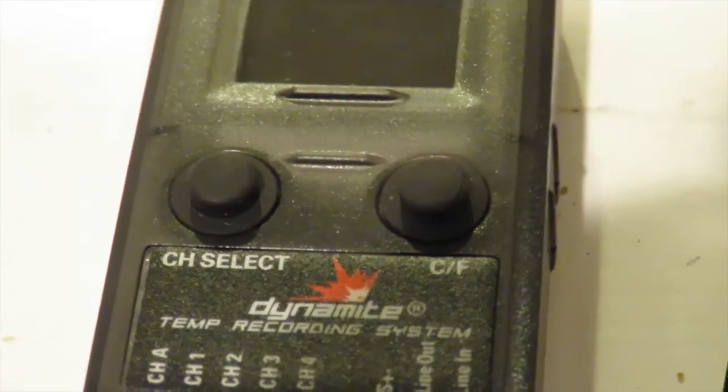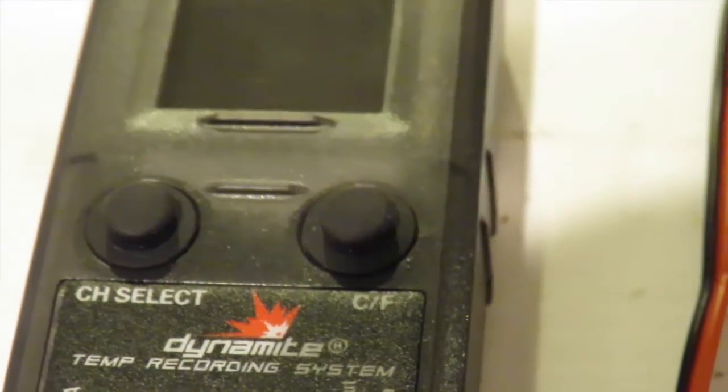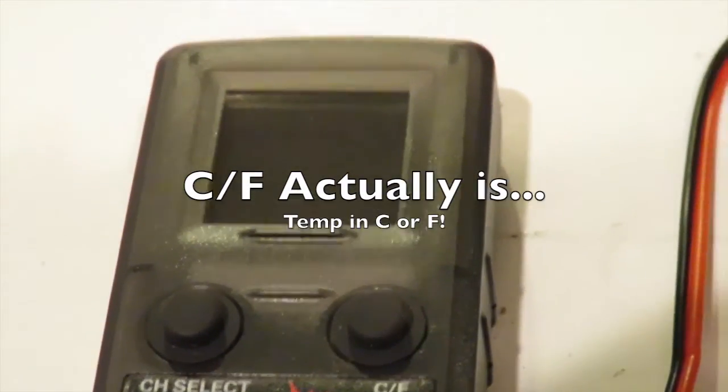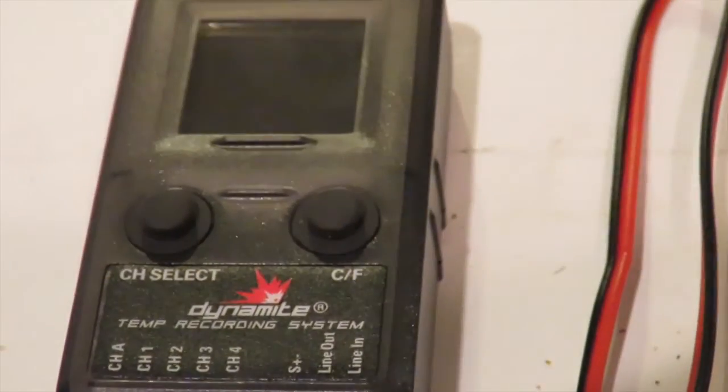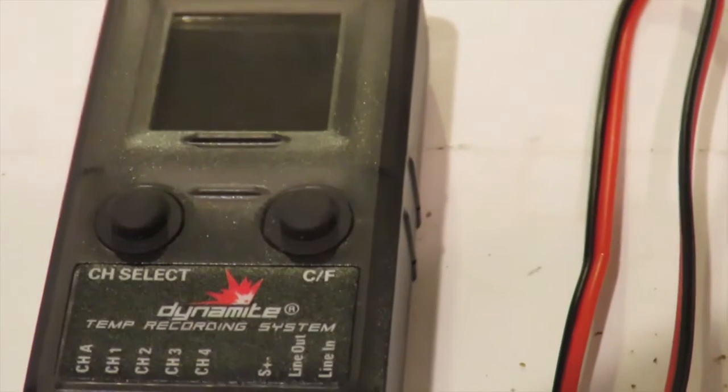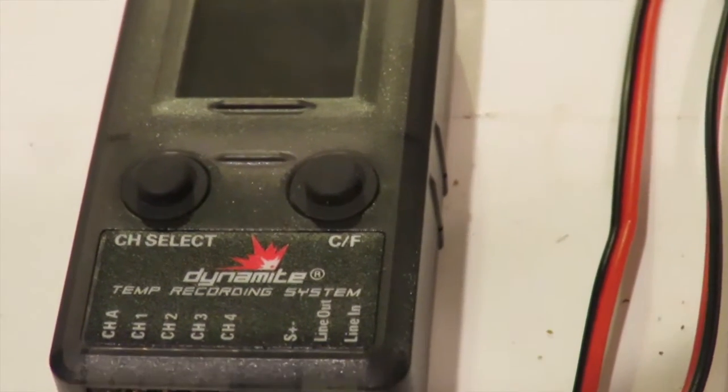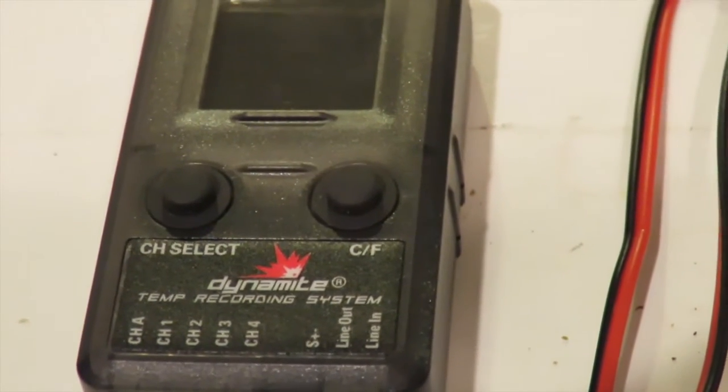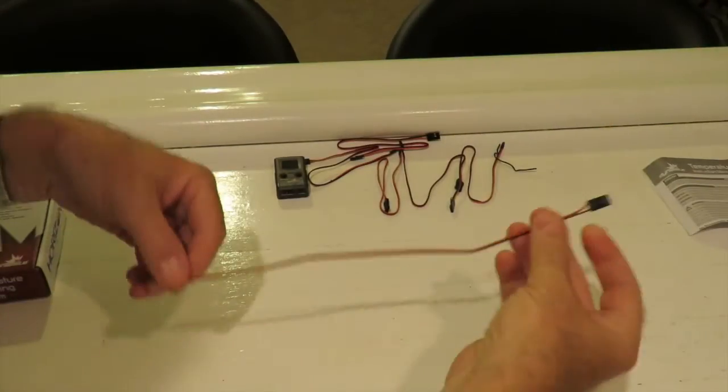We've got two buttons, channel select and C backslash F, which I'm assuming is channel function, on there and our little LCD display. I'm going to go and plug this into the receiver of one of my other cars, just so I can test this for tonight and just show the backlit light on there.